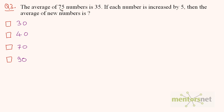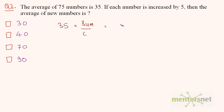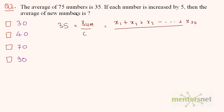The third question: the average of 75 numbers is 35. If each number is increased by 5, what is the average of the new numbers? We are given the average of 75 numbers is 35. Using the formula average equals sum divided by count, if the numbers are x1, x2, x3, ..., x75, the sum equals x1 plus x2 plus x3 ... plus x75, divided by 75.